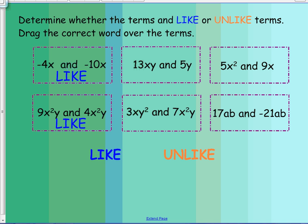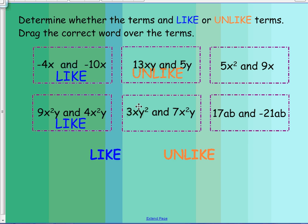Now we have 13xy and 5y. They both have coefficients and they both have y's, but because 5y does not have an x, they are considered unlike terms. Looking at 3xy squared and 7x squared y — same sort of concept. We have x and y in both, but in 3xy squared x is to the power of 1, and in 7x squared y x is to the power of 2, so they are unlike terms.